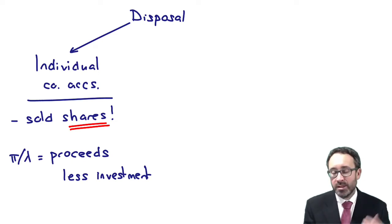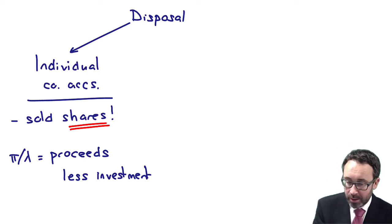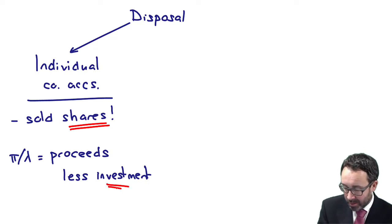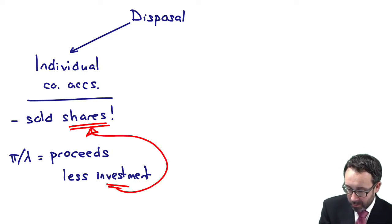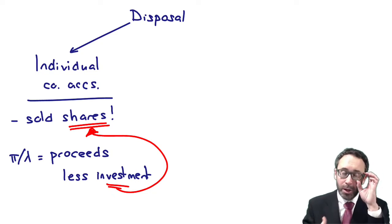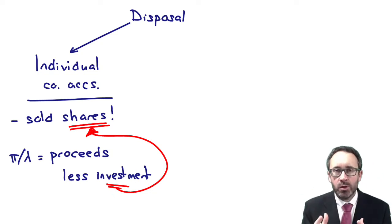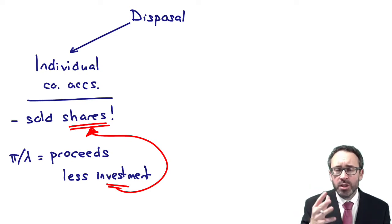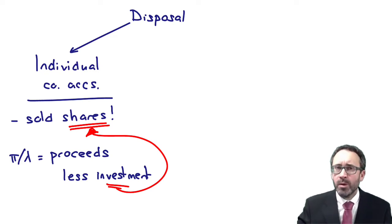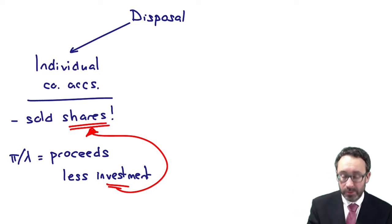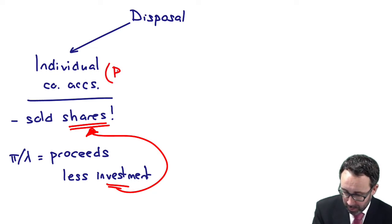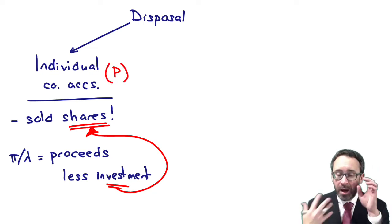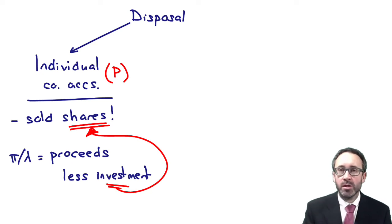You take the proceeds and deduct the investment. Why do you compare it to the value of the investment? Because that's what we're doing — we are disposing of shares in the individual company accounts. Remember, go right the way back to when we started looking at group accounts: the parent bought shares in the subsidiary. So legally it owns shares, but we then prepare the group accounts. So let's not worry about the group accounts just yet. In the parent's individual company accounts, there's a profit or loss on disposal.